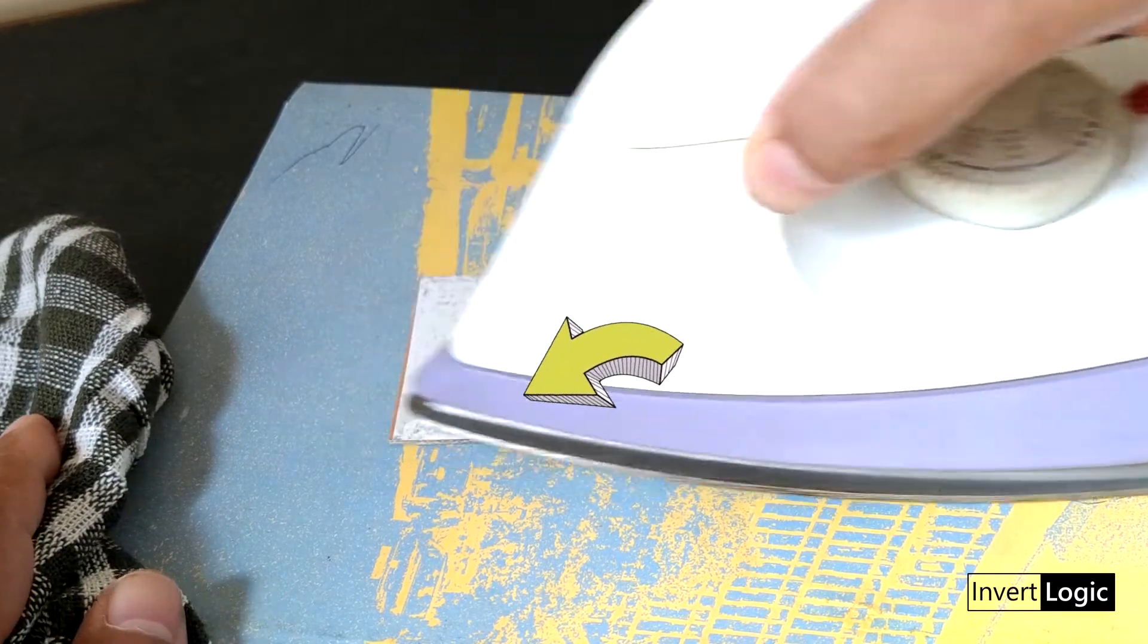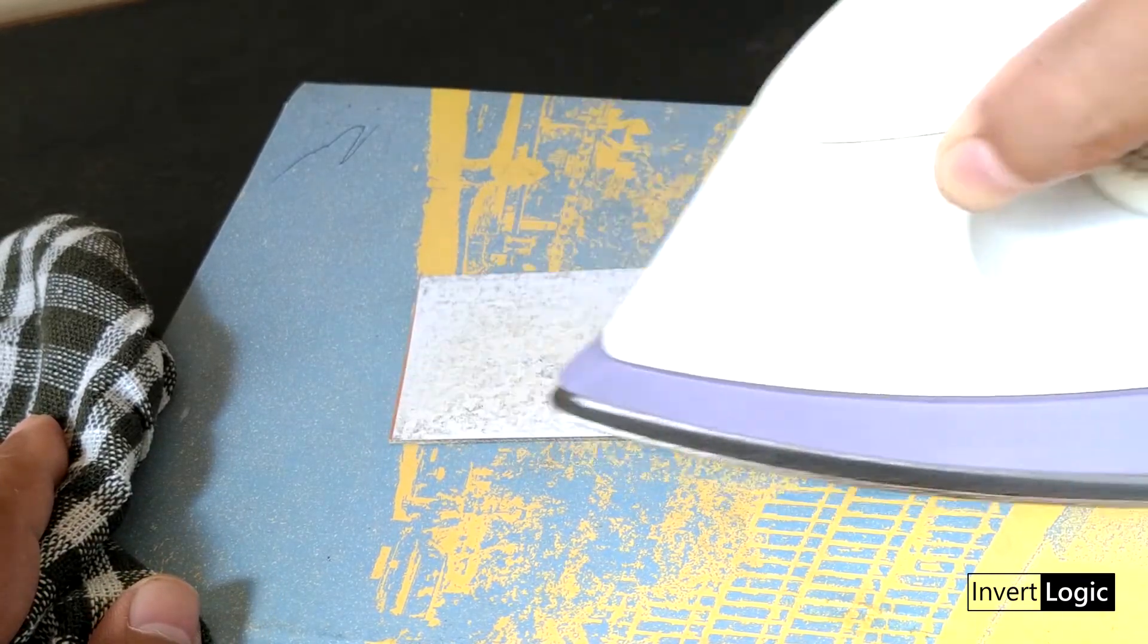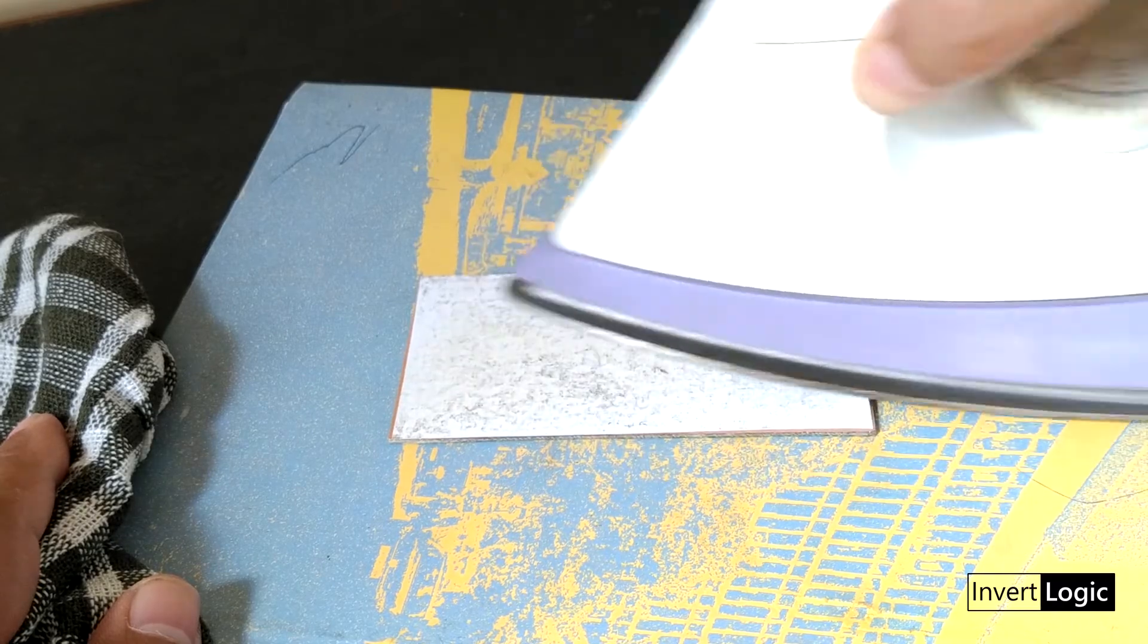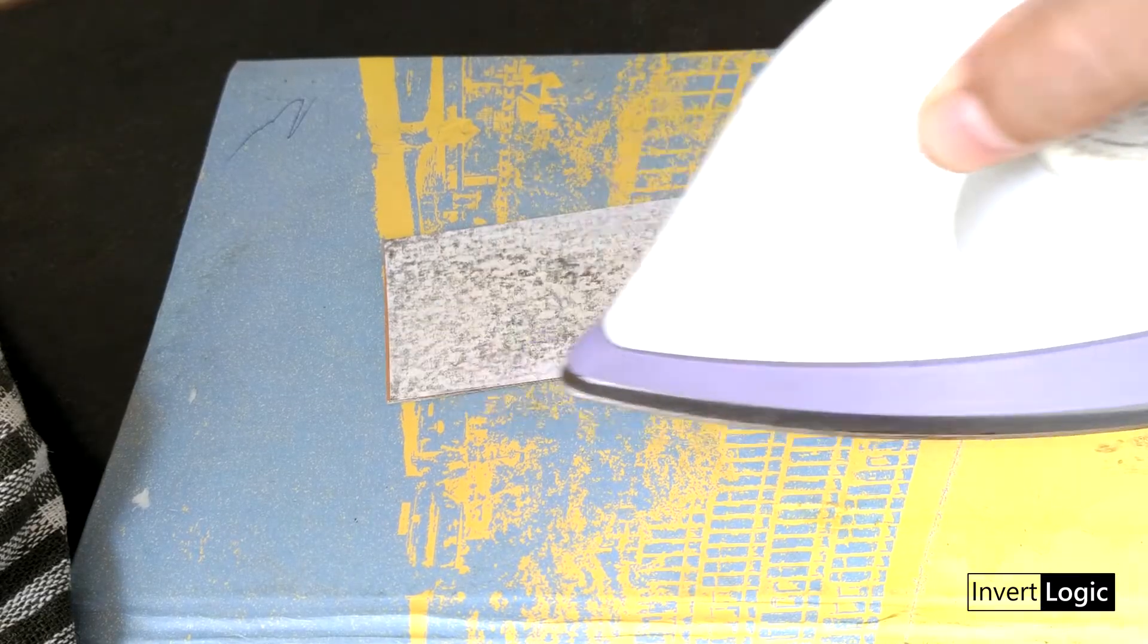By tilting your iron on the front nose and pressing on the PCB, do this on all edges evenly. Iron it for at least 5 to 10 minutes to ensure toner gets transferred on all sides.